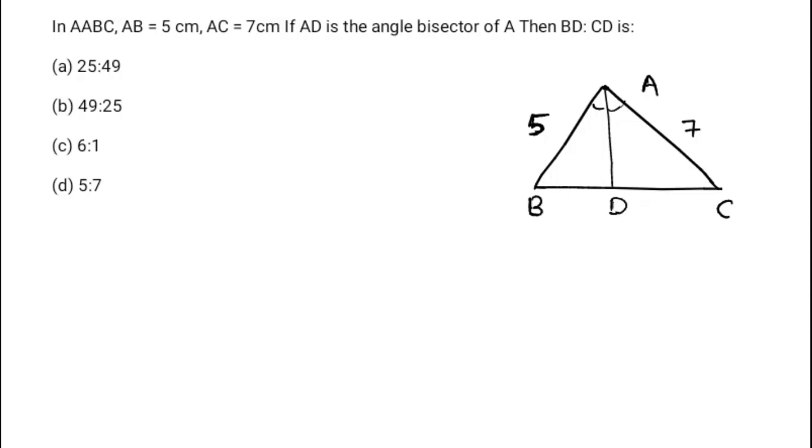Hey guys, welcome back to Solution Mitra. Today's question: we have triangle ABC in which AB is 5 cm and AC is 7 cm. If AD is the angle bisector of angle A, then what is BD:CD?